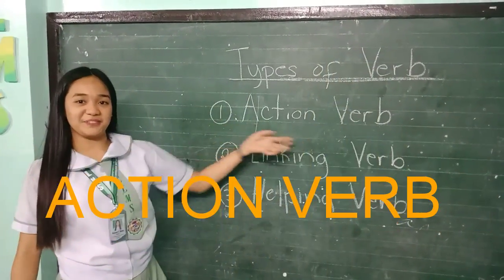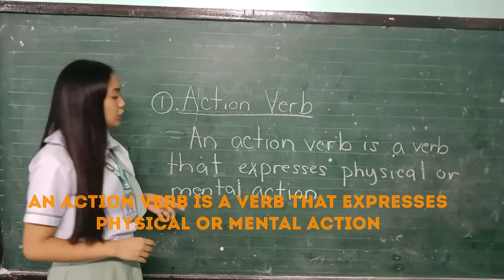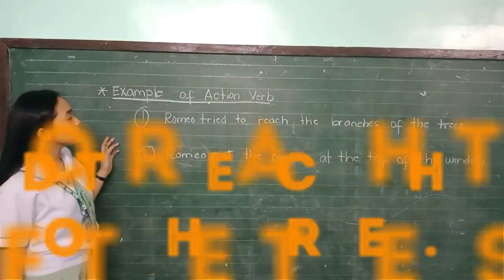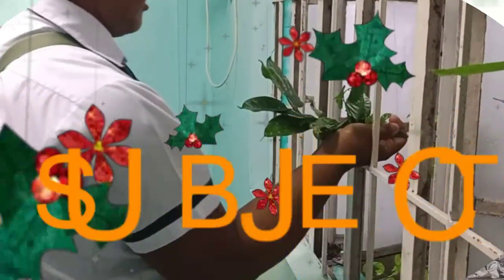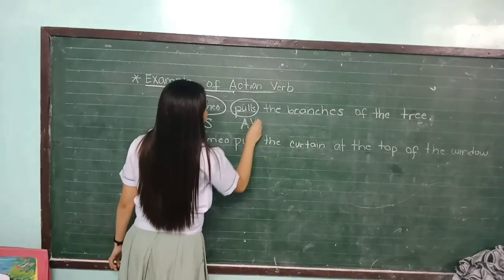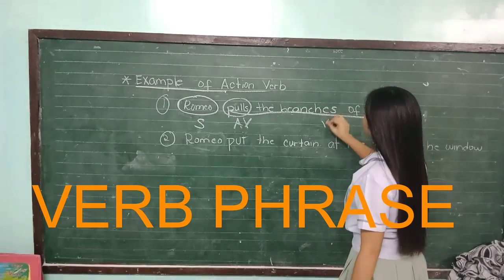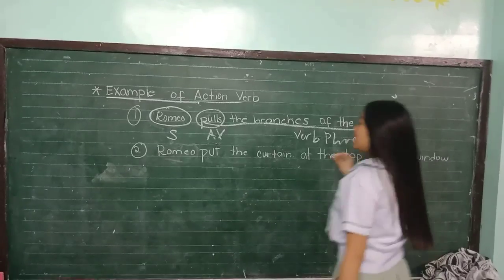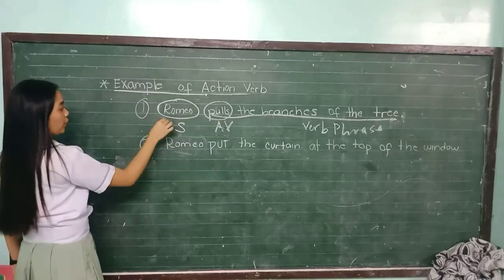The first one is action verb. An action verb is a verb that expresses physical or mental action. The first example is: Romeo tried to reach the branches of the tree. Romeo is the subject. The action verb is the action verb, and the verb phrase expresses the actions of Romeo.